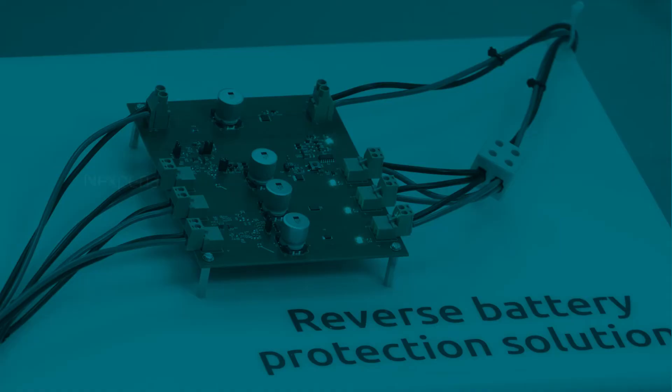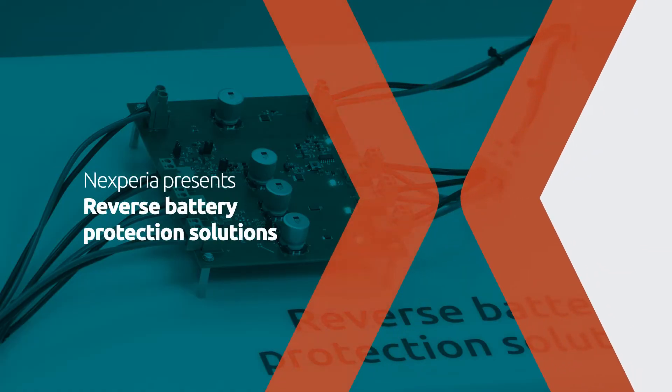There are four main components to satisfy reverse battery protection. We have recovery rectifiers, Schottky rectifiers, P-channel MOSFETs and N-channel MOSFETs.